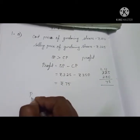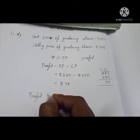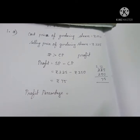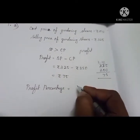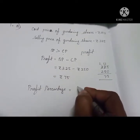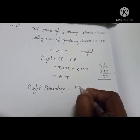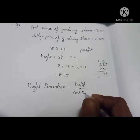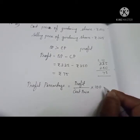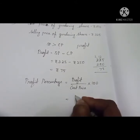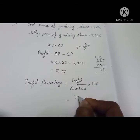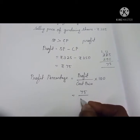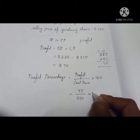Now we need to find the profit percentage. What is the formula? Profit percentage equals profit divided by cost price, multiplied by 100. Profit is rupees 75, cost price is rupees 250. So, 75 by 250 into 100.